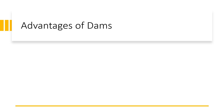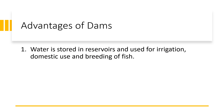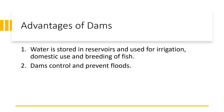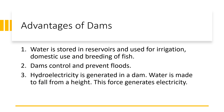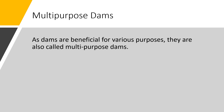There are several advantages of dams. Water is stored in reservoirs and used for irrigation, domestic use and breeding of fish. Dams control and prevent floods. Water is made to fall from a height, and this force generates electricity — hydro electricity is generated using a dam. As dams are beneficial for various purposes, they are also called multi-purpose dams.